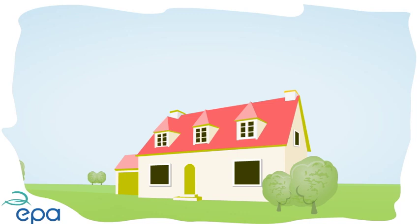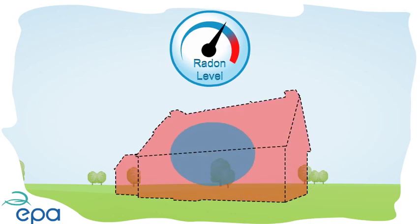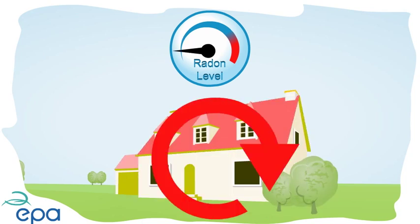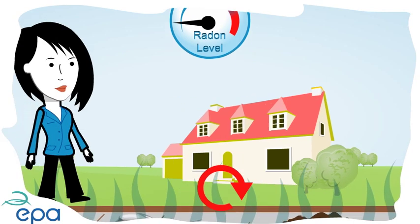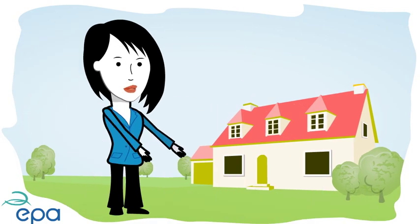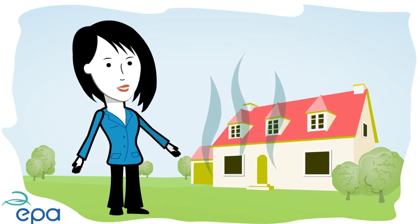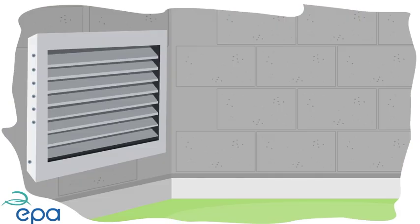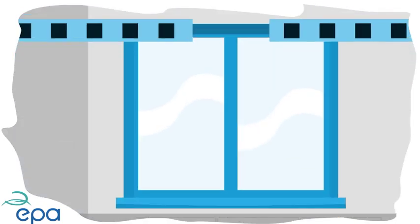There are two main ways you can reduce radon levels in your home: either by diluting the radon-rich air that is inside, or by reducing the flow of radon from the ground into your home. One of the simplest ways to dilute moderate levels of radon is to increase the indoor ventilation by unblocking air vents, installing additional wall vents or window trickle vents.